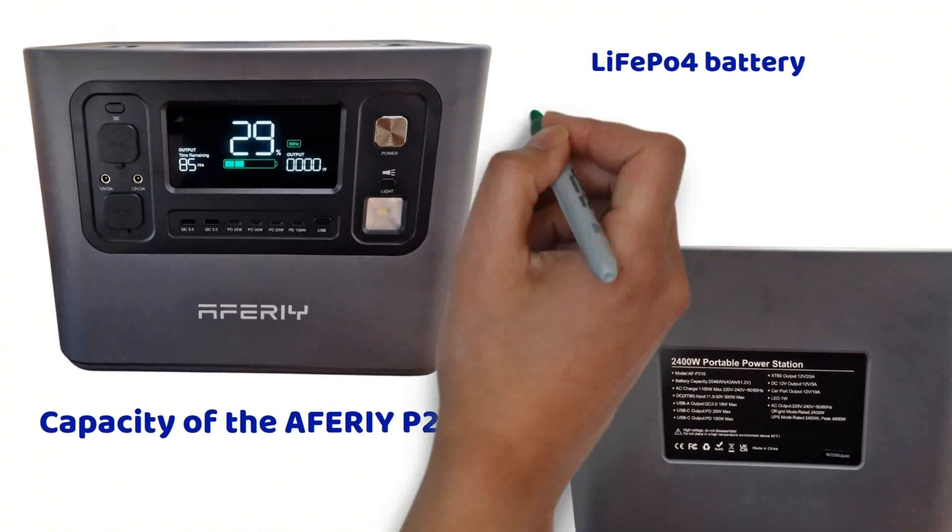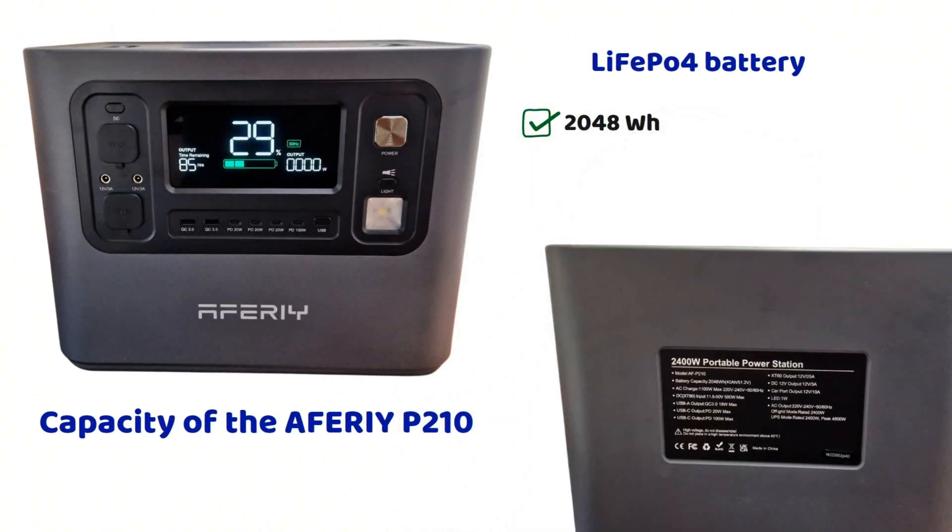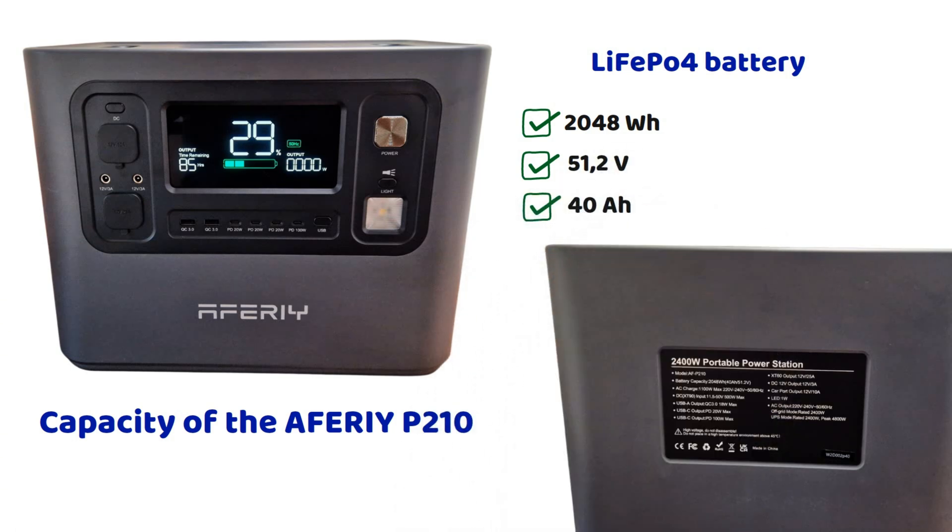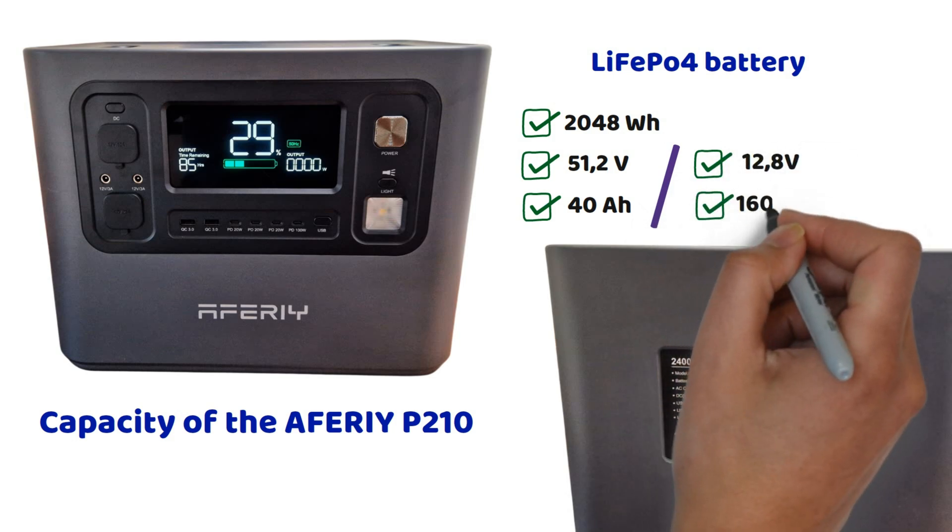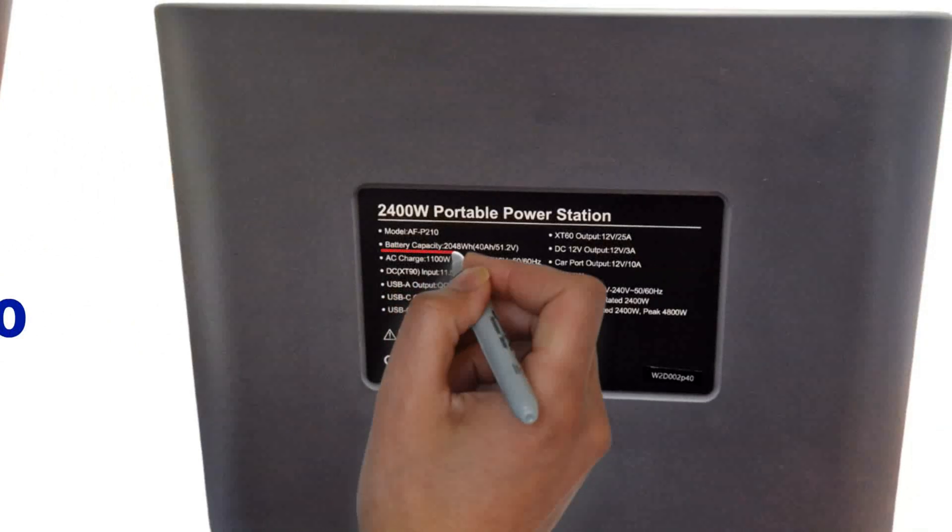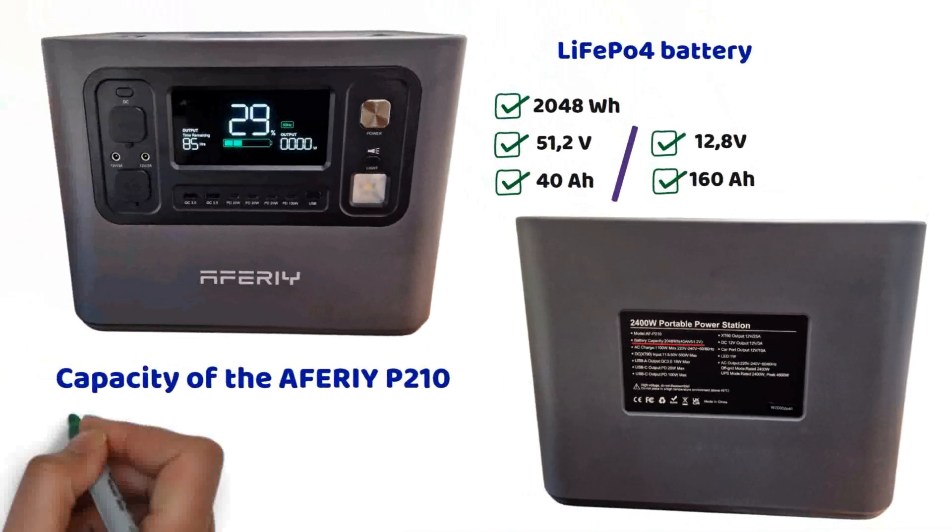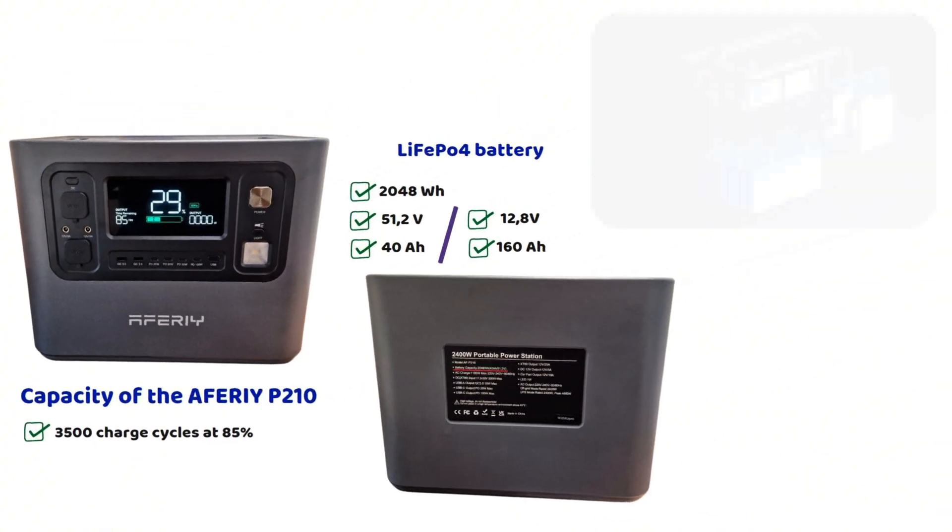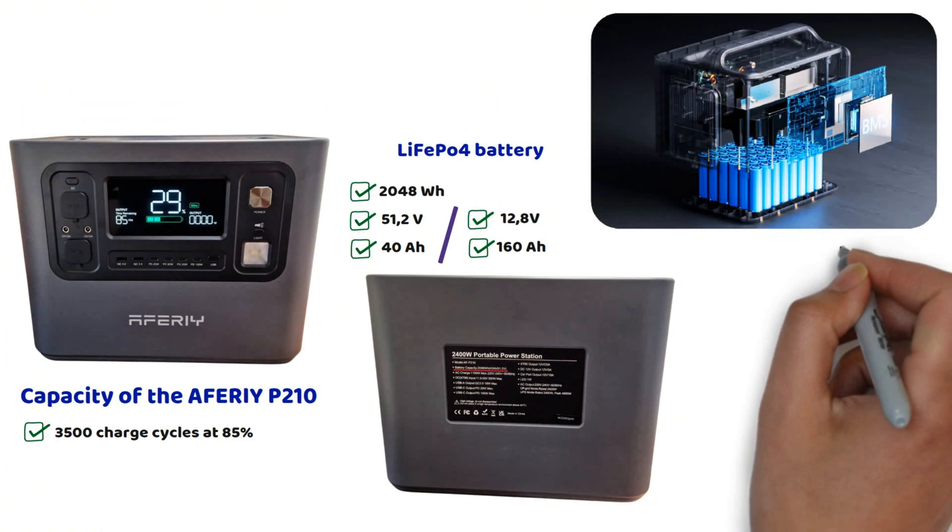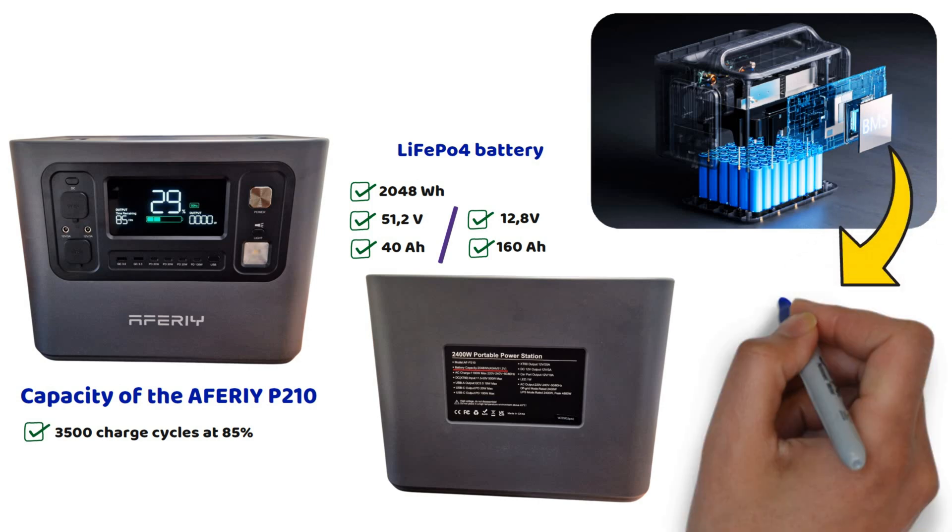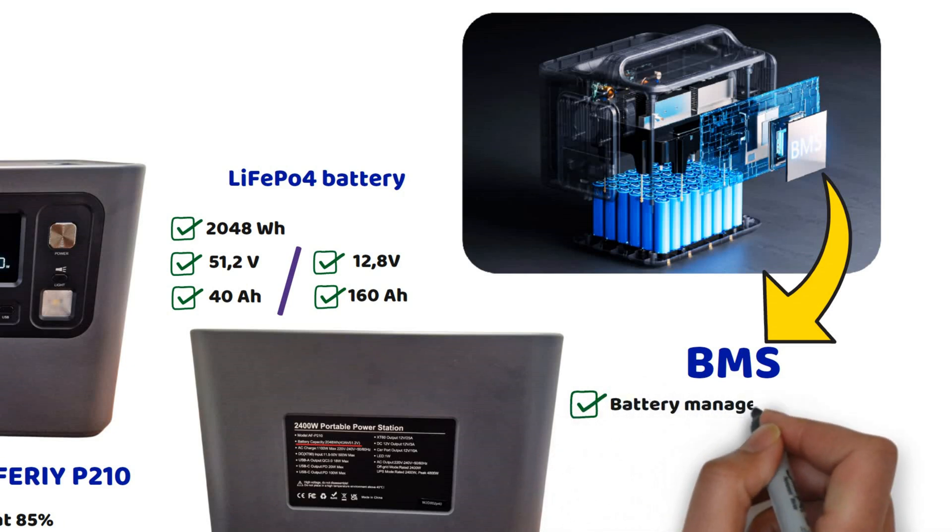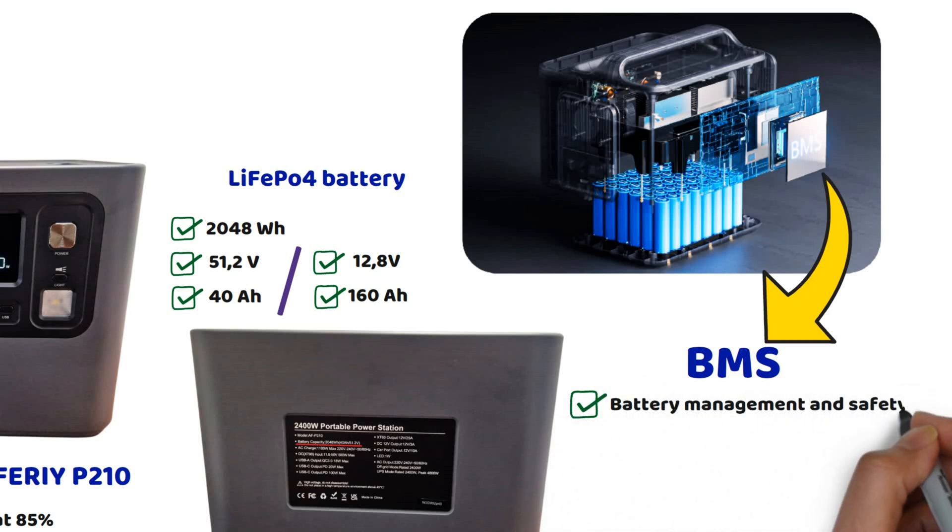Let's start the analysis of the Aferiy P210 power station by looking at the battery and its capacity. It features a lithium battery with a capacity of 2048 watt hours based on a voltage of 12.8 volts. This gives approximately 160 ampere hours of capacity. This is always helpful for price comparisons with standard individual batteries. Aferiy guarantees 3,500 charge cycles at 85% of its initial capacity, which means the battery can last up to 10 years or more, depending on your usage.